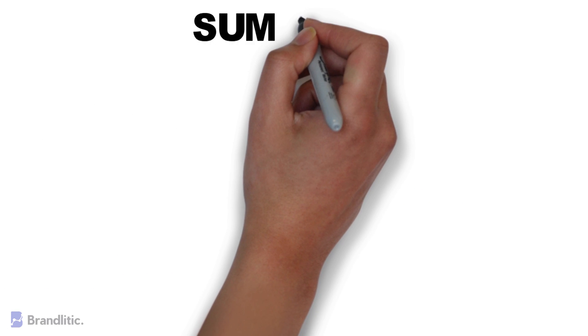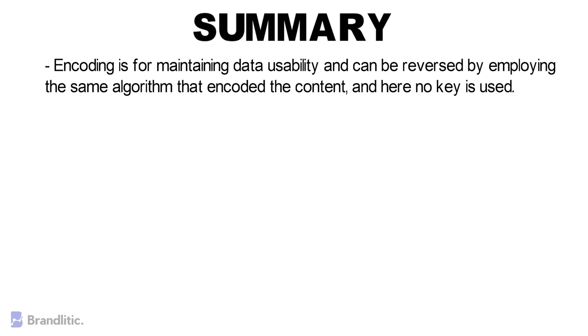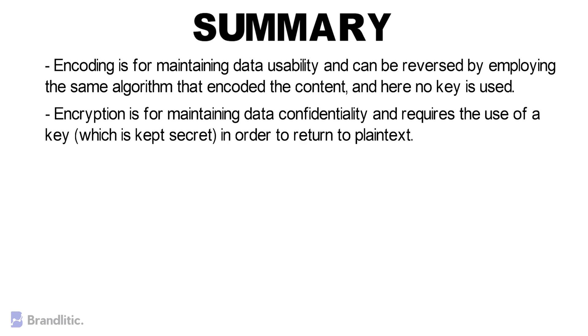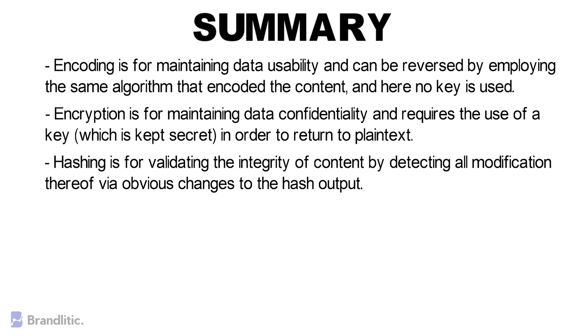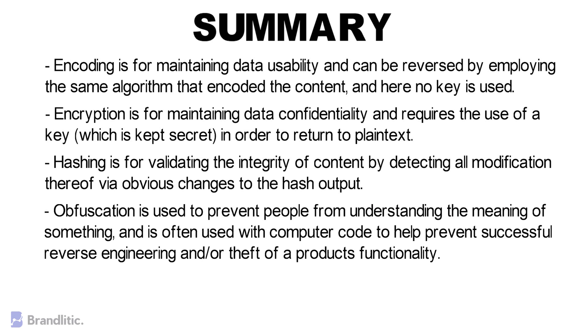As a summary, here are two versions of each concept for a better understanding. Encoding is for maintaining data usability and can be reversed by employing the same algorithm that encoded the content — no key is used. Encryption is for maintaining data confidentiality and requires the use of a key, which is kept secret, in order to return to plain text. Hashing is for validating the integrity of content by detecting all modifications via obvious changes to hash output. Obfuscation is used to prevent people from understanding the meaning of something and is often used with computer code to help prevent successful reverse-engineering and theft of a product's functionality.